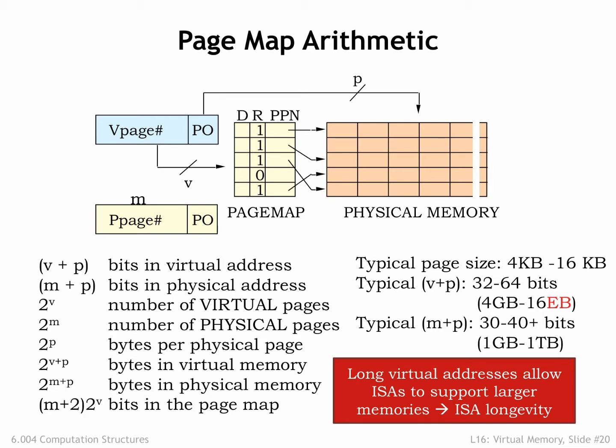The size of physical addresses is currently between 30-bits for embedded processors with modest memory needs and 40-plus bits for servers that handle large datasets. Since CPU implementations are expected to change every couple of years, the choice of physical memory size can be adjusted to match current technologies. Since programmers use virtual addresses, they're insulated from this implementation choice. The MMU ensures that existing software will continue to function correctly with different sizes of physical memory. The programmer may notice differences in performance, but not in basic functionality.